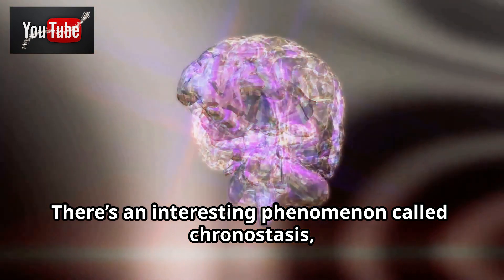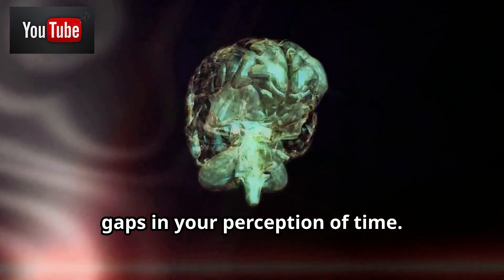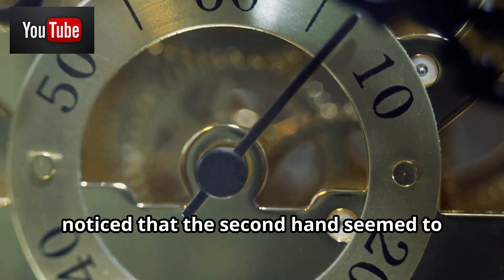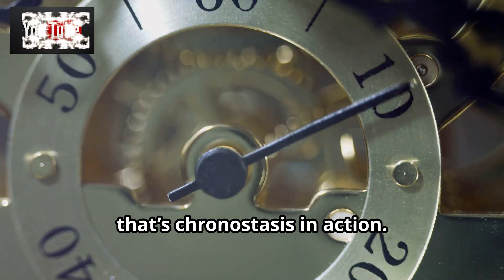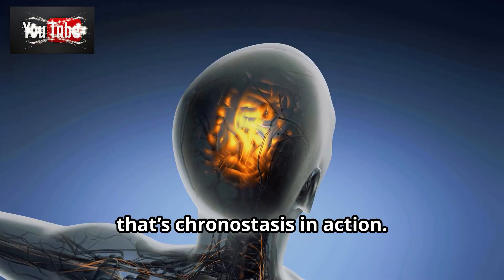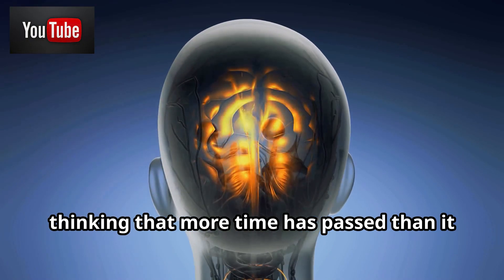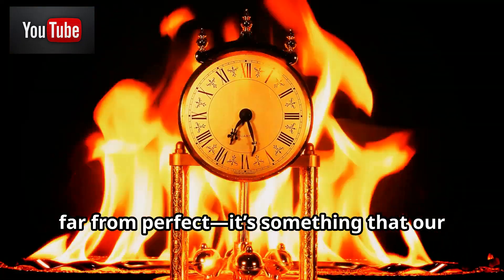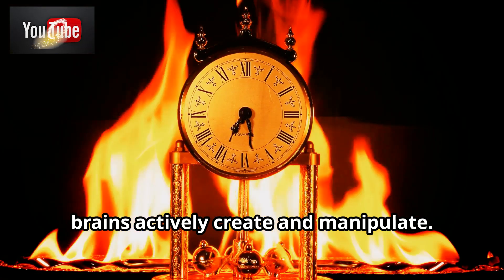There's an interesting phenomenon called chronostasis, where your brain briefly fills in the gaps in your perception of time. If you've ever glanced at a clock and noticed that the second hand seemed to freeze for a moment, that's chronostasis in action. Your brain is actually tricking you into thinking that more time has passed than it really has. This shows that our perception of time is far from perfect. It's something that our brains actively create and manipulate.